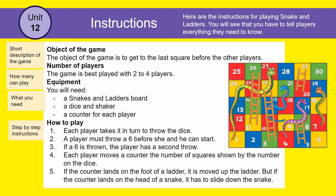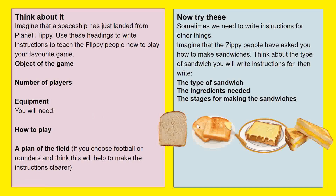Each player takes it in turn to throw the dice. A player must throw a six before they can start; if a six is thrown, the player has a second throw. Each player moves a counter the number of squares shown on the dice. If the counter lands on the foot of a ladder, it is moved up the ladder. If the counter lands on the head of a snake, it slides down the snake.